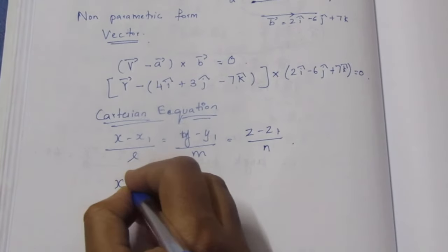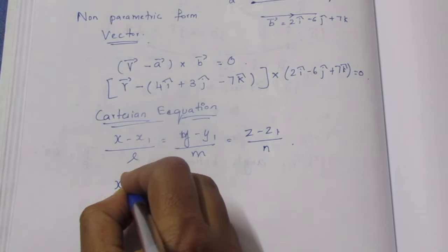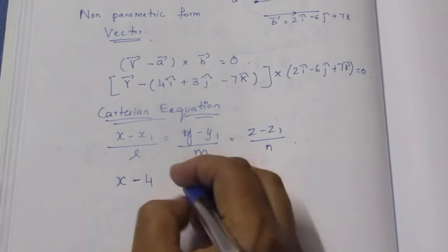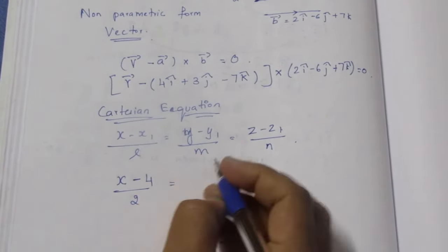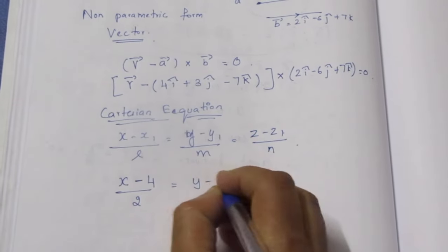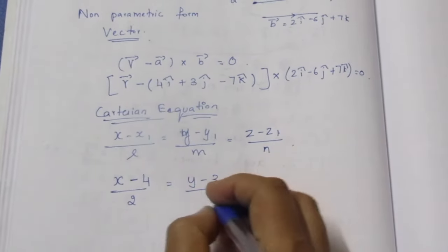X minus 4. Plus is minus, is minus is plus. So minus 4 by B value is 2. Z equal to, Y minus 3, Y minus, minus 6.